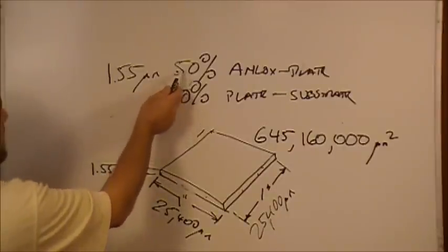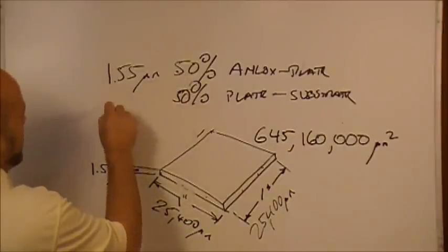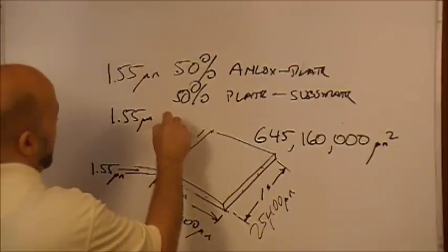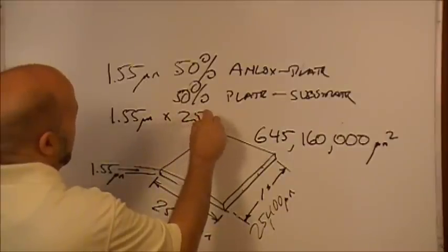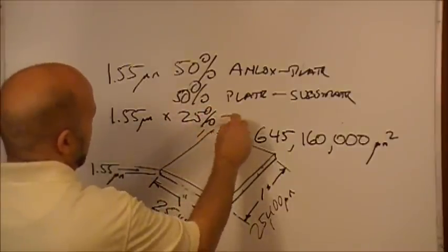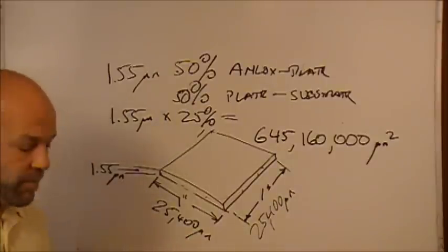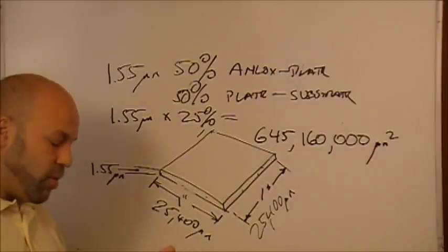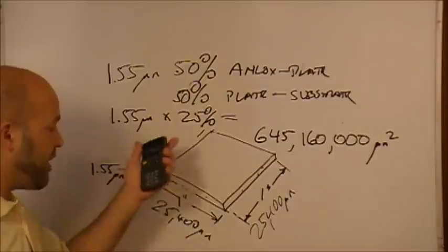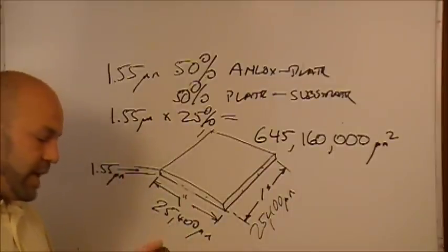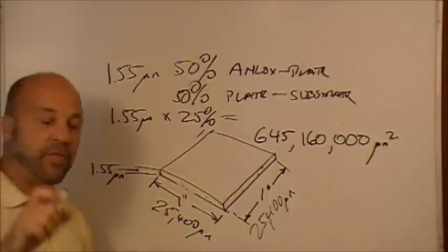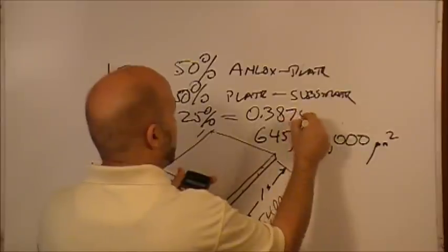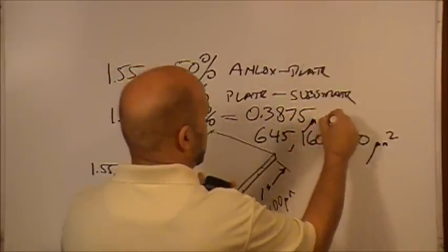We take the 50% times the 50%, and we're actually going to take 1.55 microns times 25%. And that'll be our wet film thickness according to those transfer properties. So we take 1.55 times 25% or 0.25, and that equals a film thickness of 0.3875 microns.